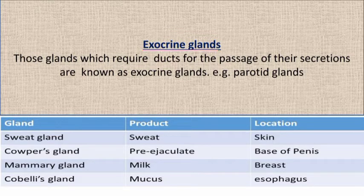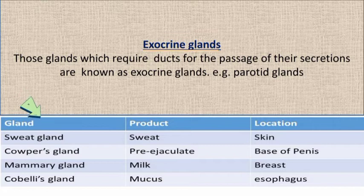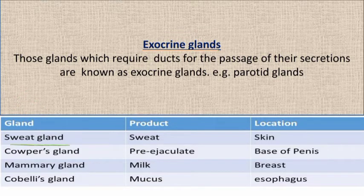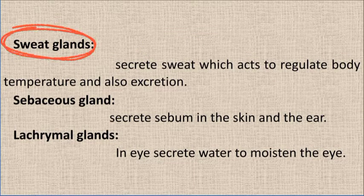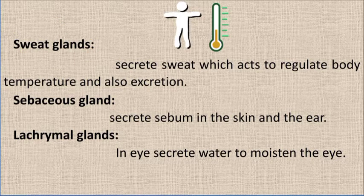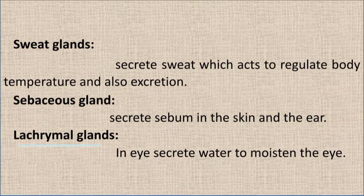Exocrine glands require ducts for the passage of their secretions — for example, the parotid gland. As shown in the table, sweat glands produce sweat in the skin, regulate body temperature, and play a major role in excretion. Sebaceous glands are present in the skin and ears, and lacrimal glands secrete water in the eyes to moisten them.